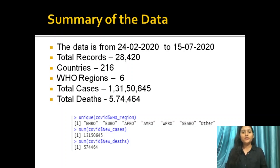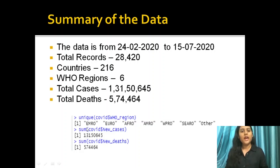The six WHO regions covered are EMRO, EURO, AFRO, WPRO, SEARO, and Other. Total cases were computed using the sum function available in RStudio. The death column in the worldwide dataset was also summed, giving a total of 754,464 deaths.